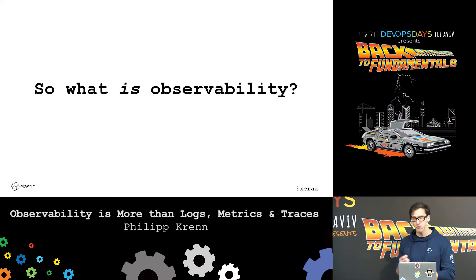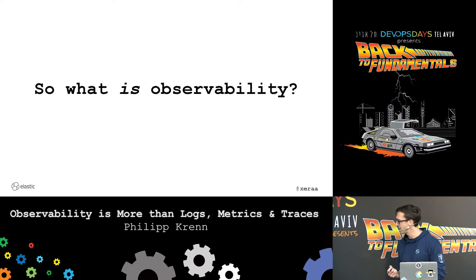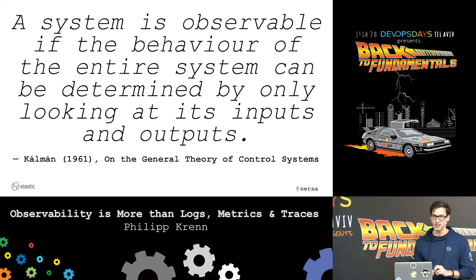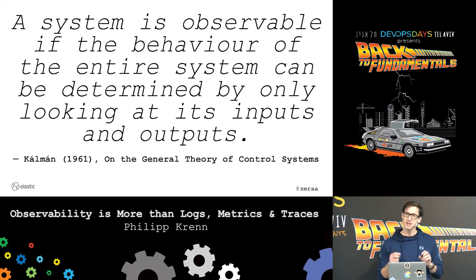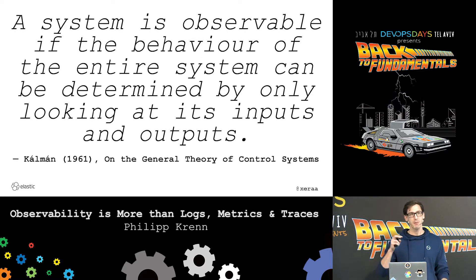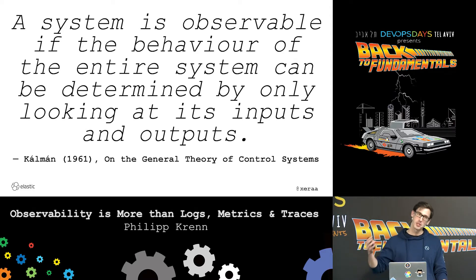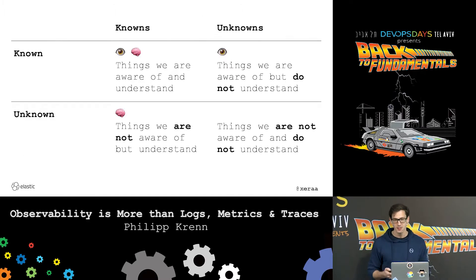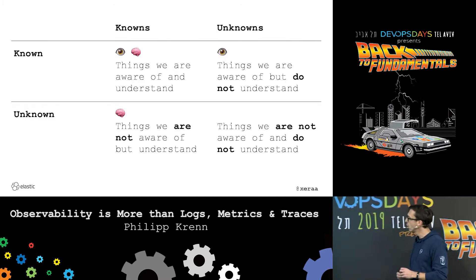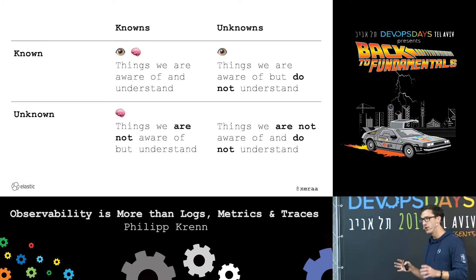So what really is observability? Where it's coming from is control theory. Basically, you want to infer the state of a system just by monitoring it from the outside — you want to see what is going on inside just from the outside. And that leaves us with the matrix of the known knowns and unknowns.